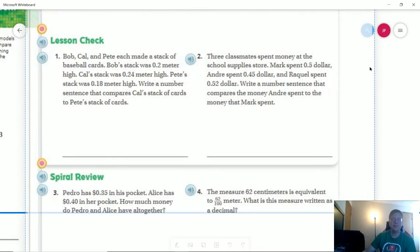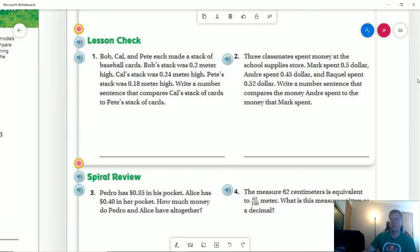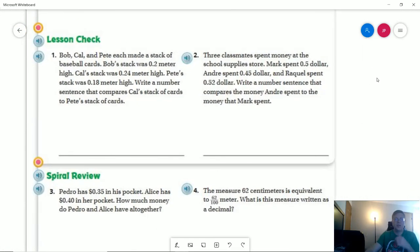Number one on the back: Bob, Cal, and Pete each made a stack of baseball cards. Bob's stack was two tenths of a meter high, Cal's stack was twenty-four hundredths, and Pete's was eighteen hundredths. Write a number sentence that compares Cal's stack to Pete's.